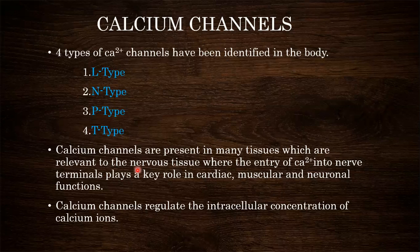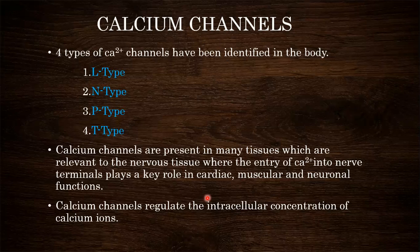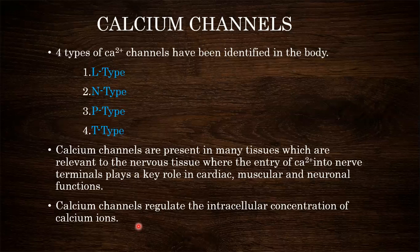When influx of calcium takes place, constriction or contraction of various cardiac muscles, muscles, and neuronal membranes takes place. If outflux of calcium occurs, then relaxation of the muscles occurs. Calcium channels regulate the intracellular concentration of calcium ions, acting as gates for regulating how much intracellular calcium should be maintained for proper balancing of the body.